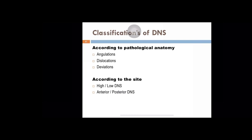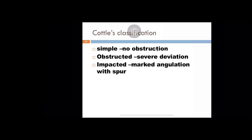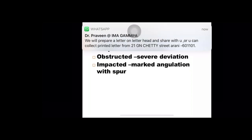Classification of deviated nasal septum: according to the pathological anatomy, it can be classified as angulations, dislocations, or deviations. According to the site, it can be high or low, anterior or posterior. If there is a mild deviation with no obstruction, it is a simple deviation. If there is a severe deviation with a spur or deviation not impinging on the lateral wall, it is an obstructed deviation. If there is a marked angulation with impingement on the lateral wall, then it becomes impacted.